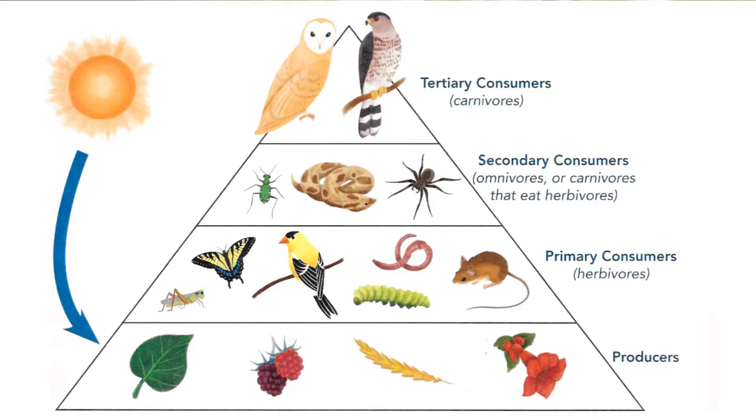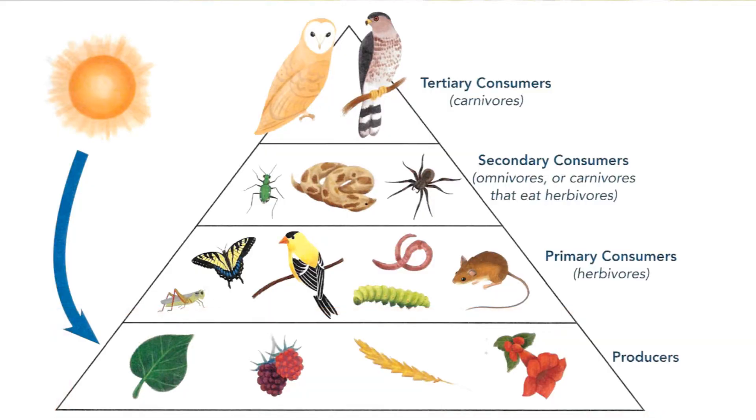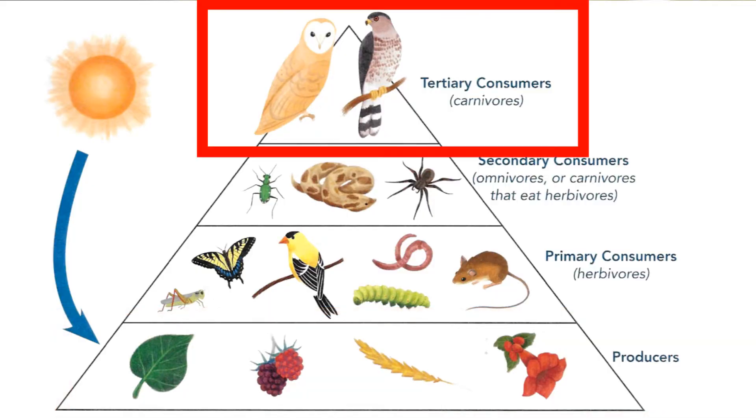In a healthy, balanced ecosystem, you'll have animals and plants at all these different levels, from the producers, like plants, to apex predators, like the Cooper's hawk.